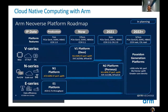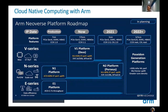ARM provides a Neoverse platform to support cloud-to-edge computing. The ARM N1 platform currently provides very high performance for cloud-to-edge computing, delivering a 60% performance uplift from the original A72 ARM cores. For the next generation in 2021, the N2 platform — codenamed Perseus — improves performance with semiconductor technology moving from 7nm to 5nm.